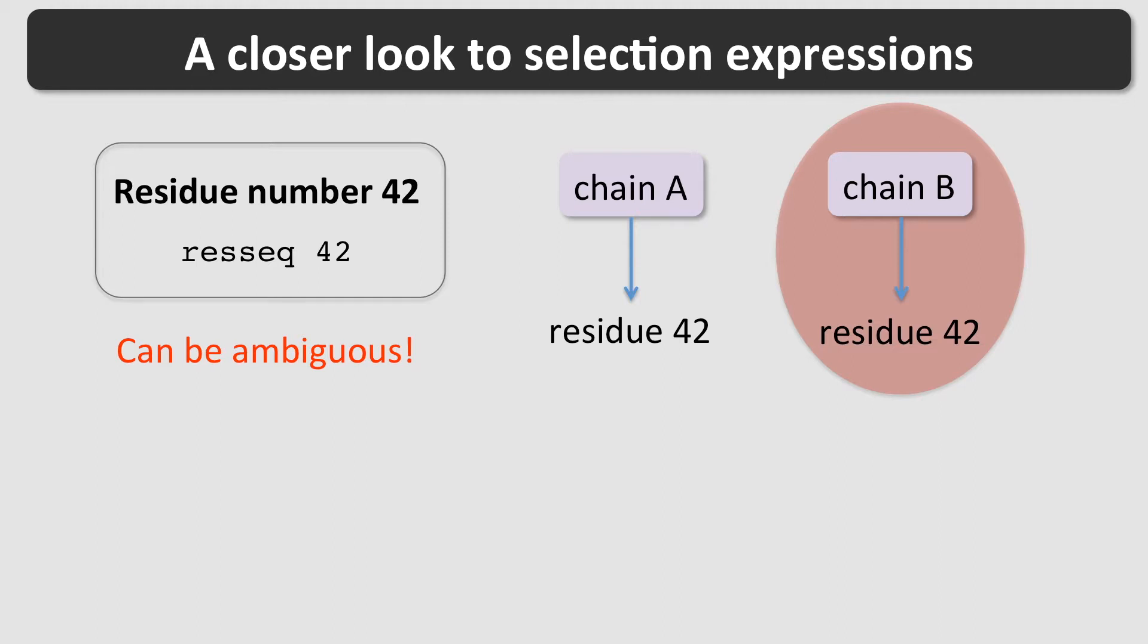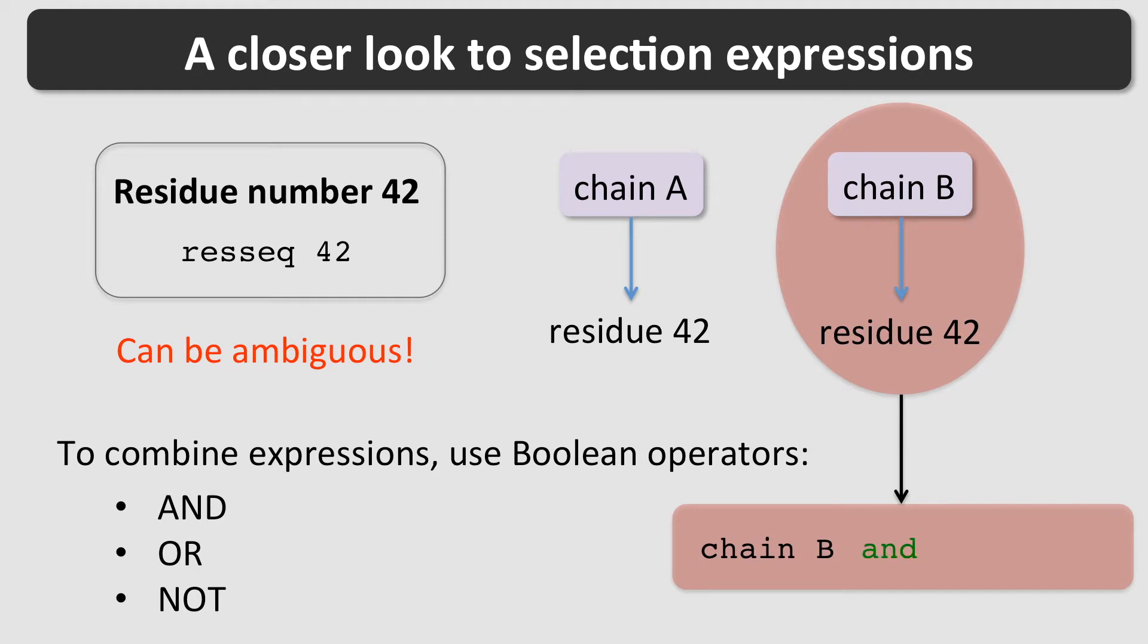In general, selections can be combined by using the Boolean operators AND, OR, and NOT. In our example, the syntax to select residue 42 in chain B is chain B and RSEC 42.